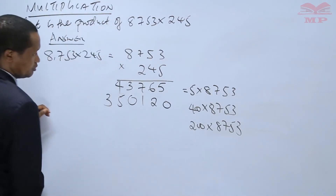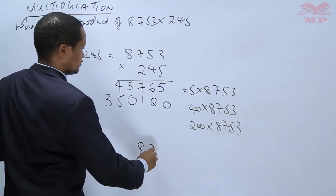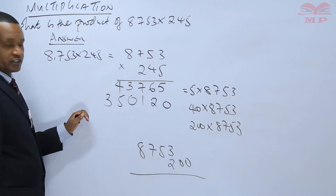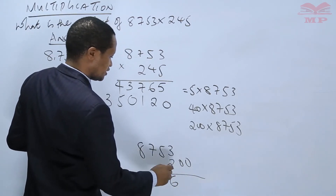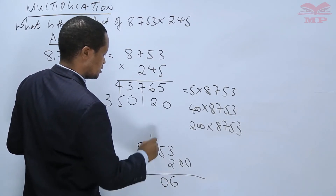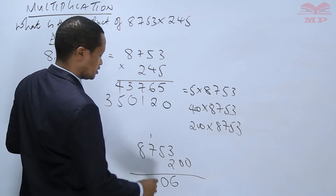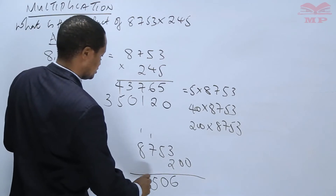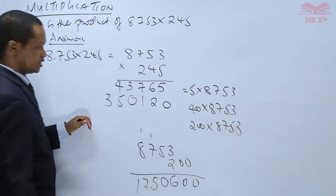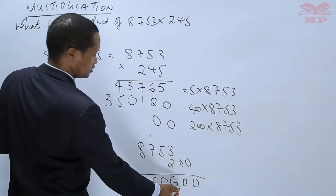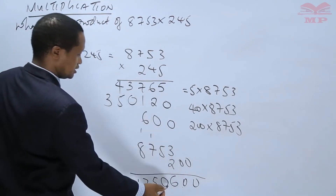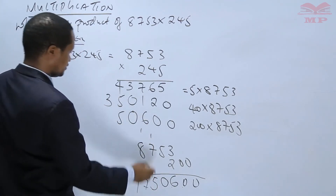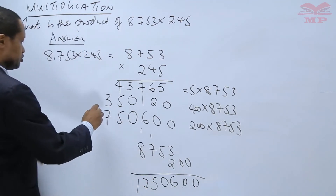Lastly, we multiply 8,753 times 200: 3 times 2 is 6. 5 times 2 is 10, write 0, carry 1. 7 times 2 is 14 plus 1, which is 15, write 5, carry 1. 8 times 2 is 16 plus 1, which is 17. With two zero placeholders we write: 0, 0, 6, 0, 5, 7, then 1.